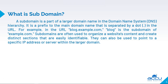It is a prefix to the main domain name that is separated by a dot in the URL. For example, in the URL blog.example.com, 'blog' is the subdomain of example.com. Subdomains are often used to organize a website's content and create distinct sections that are easily identifiable. They can also be used to point to a specific IP address or server within the larger domain.